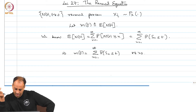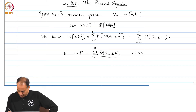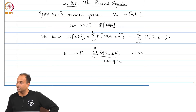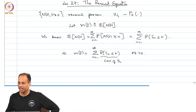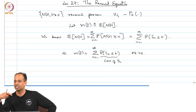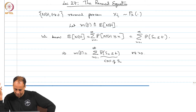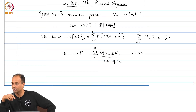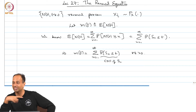In principle, given the CDF of X_i's, I can find the CDF of S_n for each n by convolution, because they are i.i.d. random variables — it is just an n-fold convolution of the distribution of X with itself. So the CDF of S_n is easy to find, and then you sum for n equals 1 to infinity to get m(t). In principle this is straightforward, but in practice it is very cumbersome — you have to do n-fold convolutions and take an infinite sum, which can be a big headache.